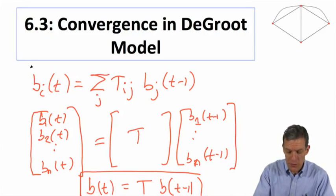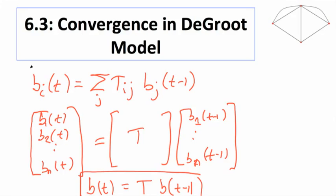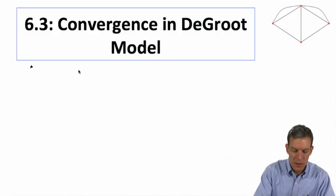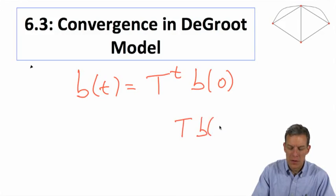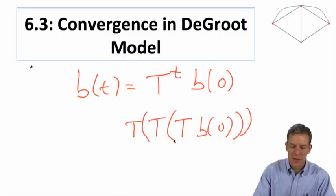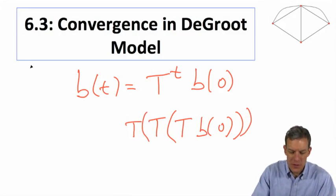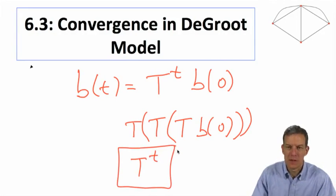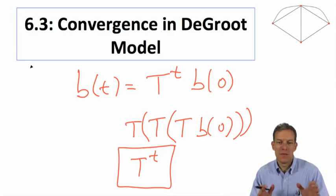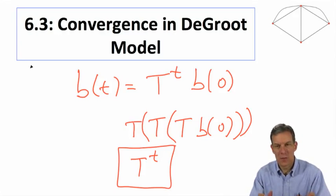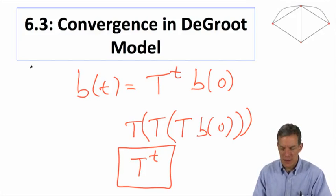In particular, this means we can represent the belief at some time t as b(t) = T^t times b(0). Because b(1) equals T times b(0), b(2) equals T squared times b(0), and so on — we're just raising the matrix to the t-th power. The reason this model is so nice is that we know a lot about matrices raised to powers, especially matrices where rows all sum to 1 and are non-negative. There's a lot of study in Markov chain theory that covers exactly these kinds of matrices.